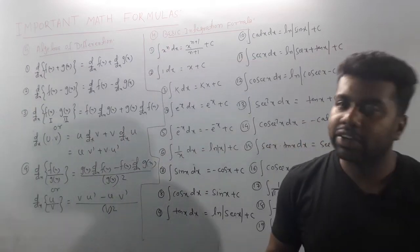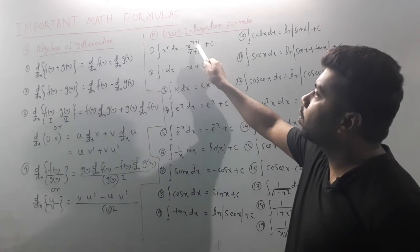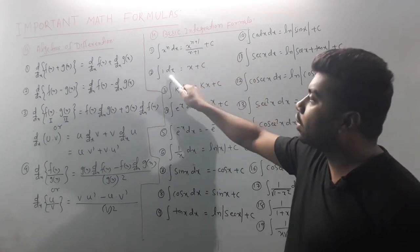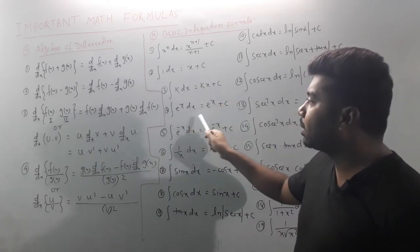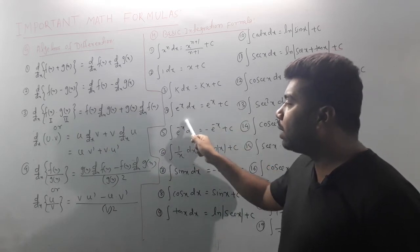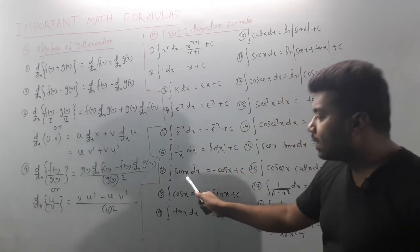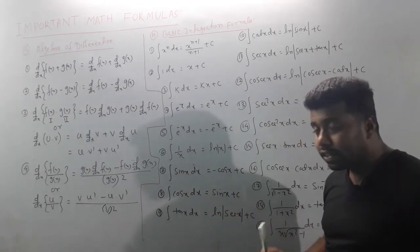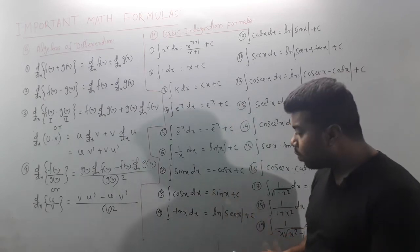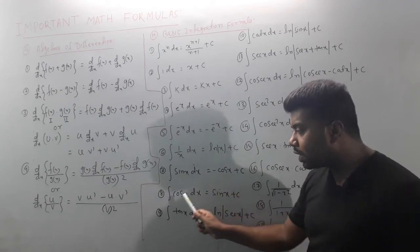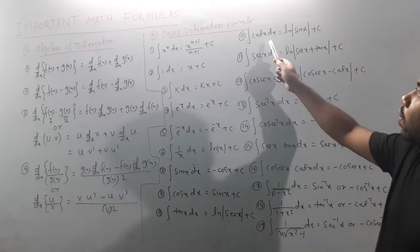Basic integration formulas: ∫xⁿ dx = xⁿ⁺¹/(n+1) + c. ∫eˣ dx = eˣ + c. ∫(1/x) dx = ln(x) + c. ∫sin(x) dx = -cos(x) + c. ∫cos(x) dx = sin(x) + c. Note: derivative of sin(x) is cos(x), and derivative of cos(x) is -sin(x), so sin(x) integration is -cos(x) and cos(x) integration is sin(x). ∫tan(x) dx = ln|sec(x)| + c. ∫cot(x) dx = ln|sin(x)| + c.